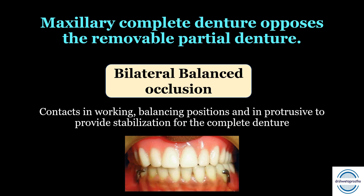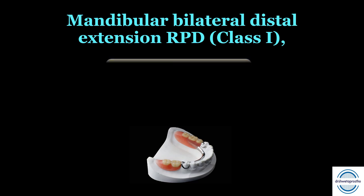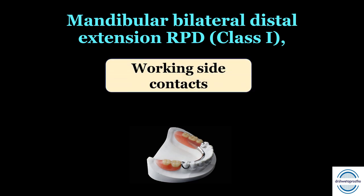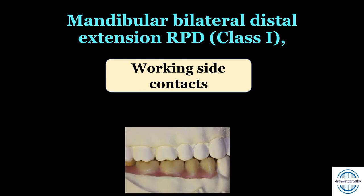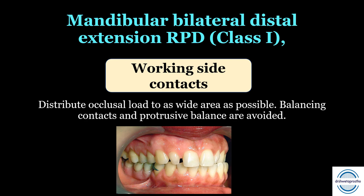The reason for giving bilateral balanced occlusion is to provide stability to the complete denture. The next condition is the mandibular bilateral distal extension RPD, which is a Kennedy Class 1 case. In this, we give only working side contacts — there will be no balancing contacts and no contacts on protrusion. Working side contacts alone are sufficient to distribute the occlusal load over as wide an area as possible.